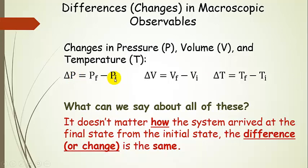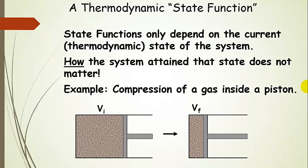If we go from some initial pressure to a final pressure, it doesn't matter if we go slowly or quickly. All that matters is that the change in pressure is the same. The same is true for the change in volume and the change in temperature. This is basically the definition of a state function — it only depends on the current thermodynamic state of the system, where it started and where it arrived. How the system attained that state doesn't matter. History doesn't matter, bottom line.